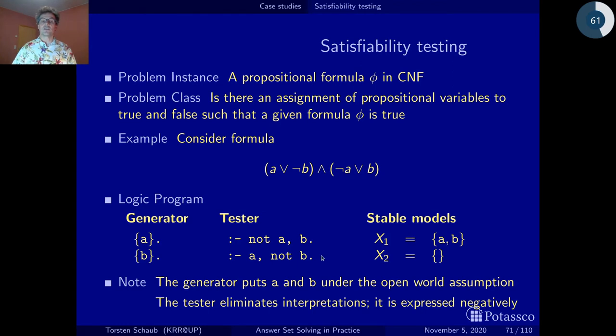Something to note. First of all, the generator puts both a and b under the open world assumption. You see in this way, if you want to model in ASP, you can just say some variables are treated under the open world assumption and the rest is treated under the closed world assumption. That's actually pretty cool when modeling. In any way, generators are often modeled with choice rules.